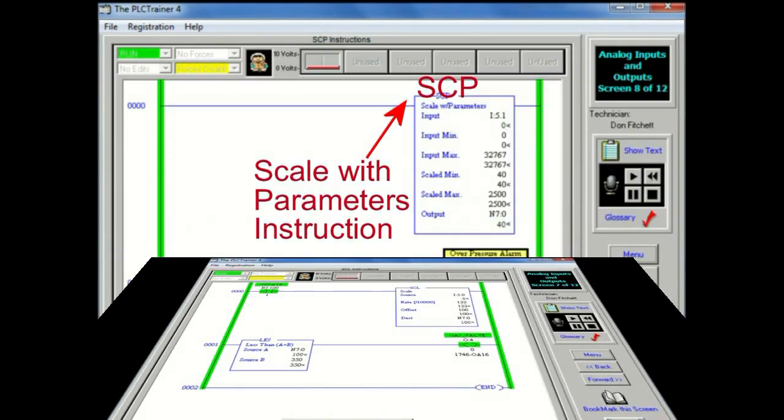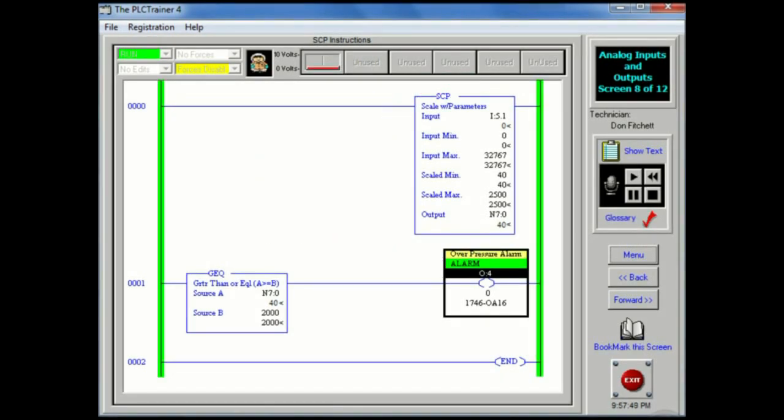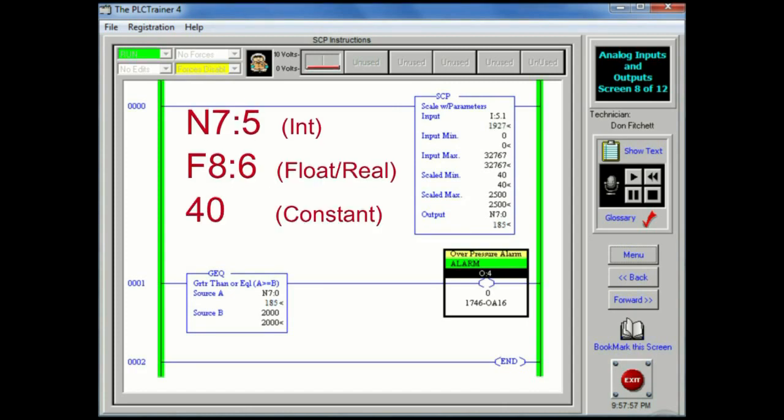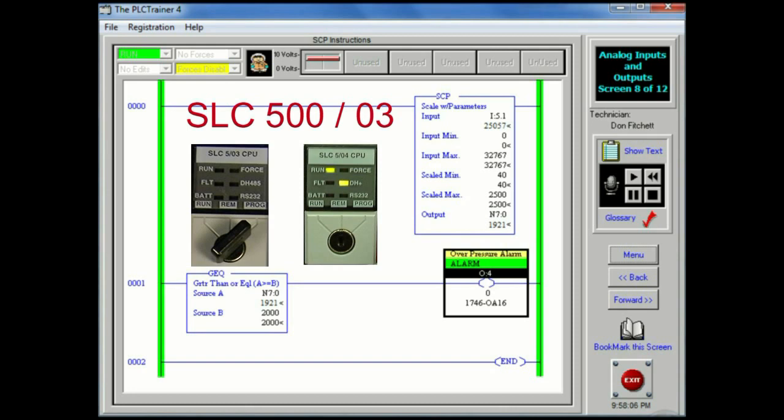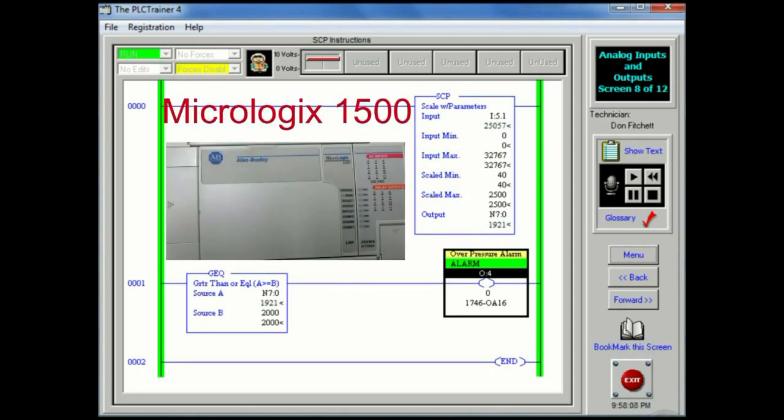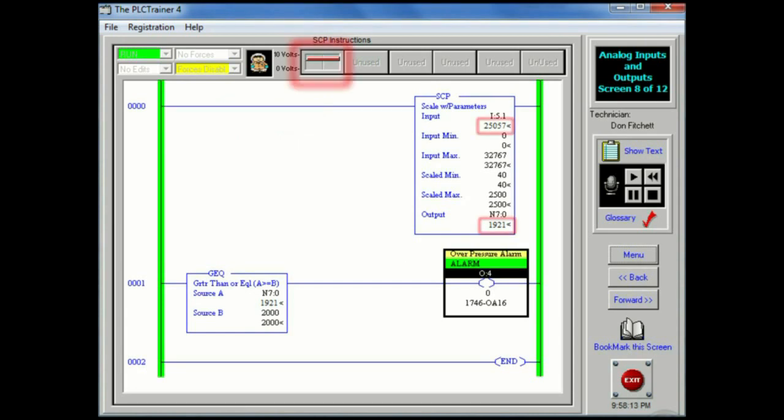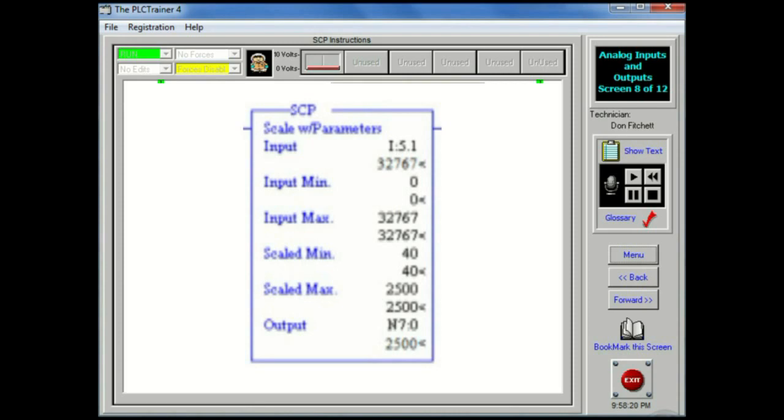SCP or scale with parameters instruction is an output instruction that contains six parameters. These parameters may be integer, floating point, or immediate data values or constants. The SCP instruction is only available in SLC 5/03 processors and above, as well as MicroLogix 1200 and 1500 processors. All of the calculations needed for the SCL instructions are done by the processor when using the SCP instruction.